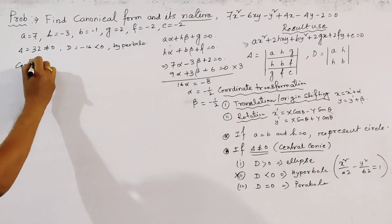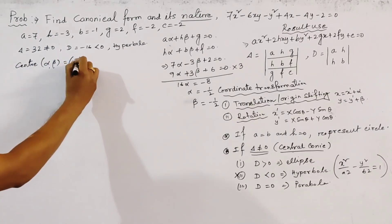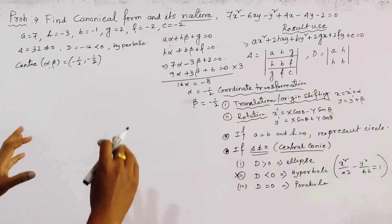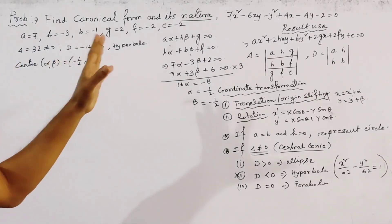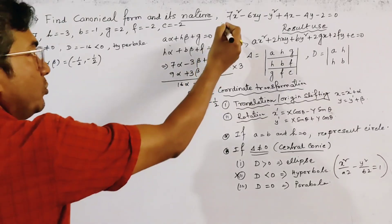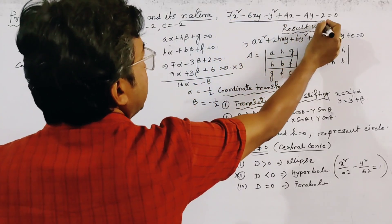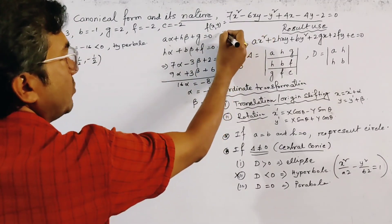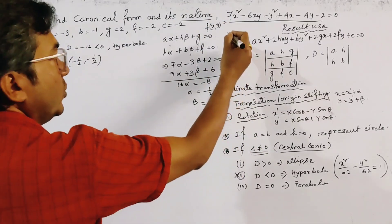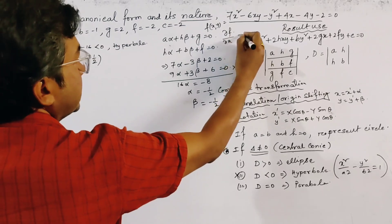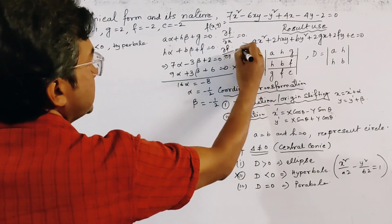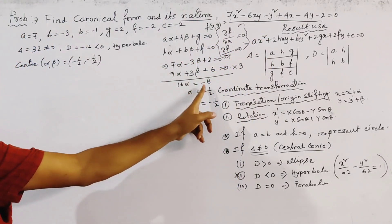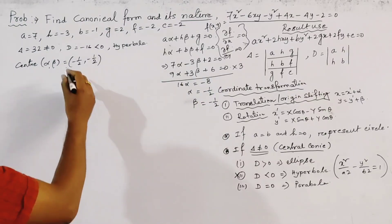The center of the conic is (-1/2, -1/2). The second method uses partial derivatives: if we take the given equation as f(x,y), we set ∂f/∂x = 0 and ∂f/∂y = 0, and solving these two equations gives the same center (-1/2, -1/2).